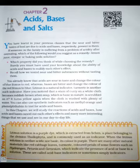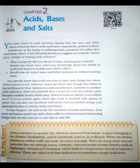On passing excess carbon dioxide, the following reaction takes place: CaCO₃ + H₂O + CO₂ → Ca(HCO₃)₂ (soluble in water). Limestone, chalk, and marble are different forms of calcium carbonate. All metal carbonates and hydrogen carbonates react with acids to give the corresponding salt, carbon dioxide, and water. Thus, the reaction can be summarized as: metal carbonate or metal hydrogen carbonate + acid → salt + CO₂ + water.